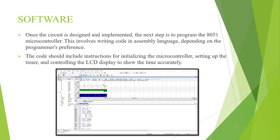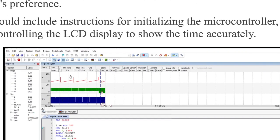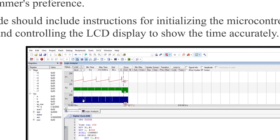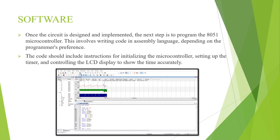The software of this project involves writing code in assembly language and then using Keil Microvision software to run the code. Here, port 1 represents seconds, port 2 represents minutes, and port 3 represents hours. We can see that every 60 seconds the value of port 1 is reset to 0, indicating a minute has passed.